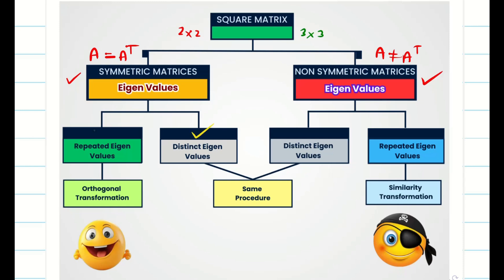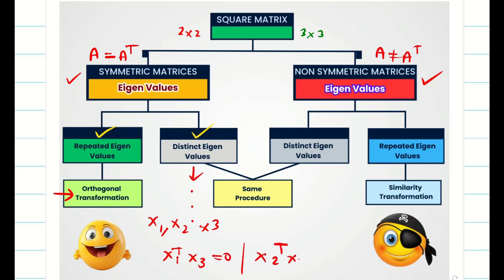The eigenvalues may all be different, or some eigenvalues may be repeated. When all the eigenvalues are distinct, we just find the corresponding eigenvectors using those eigenvalues. When the eigenvalues are repeated, we use orthogonal transformation — suppose we have all three eigenvectors x1, x2, x3, we know they are mutually orthogonal. We use x1 transpose x3 = 0 and x2 transpose x3 = 0 to find the third eigenvector x3. This is orthogonal transformation.